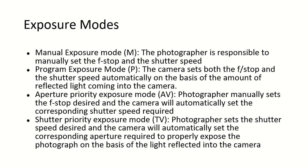Exposure modes. Manual exposure mode: the photographer sets the f-stop and shutter speed. Program exposure mode: the camera itself sets both the f-stop and shutter speed automatically. Aperture priority exposure mode: the f-stop is set by the photographer and the shutter speed is set by the camera automatically. Shutter priority exposure mode: the shutter speed is set by the photographer and the camera sets the aperture or f-stop.